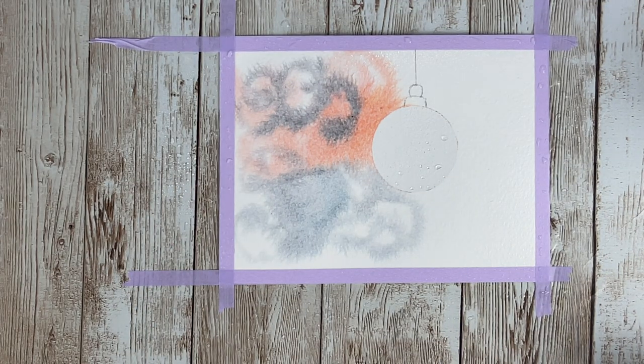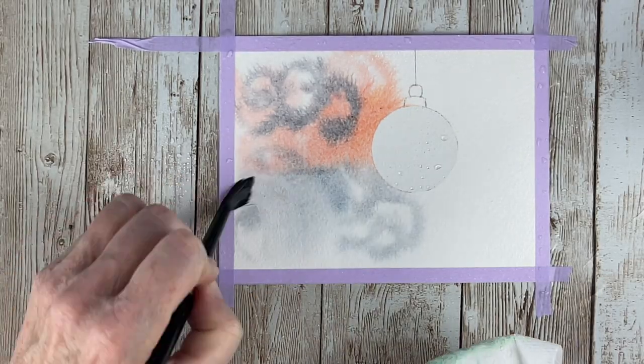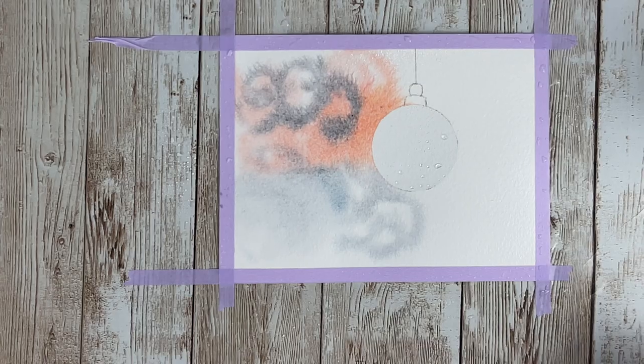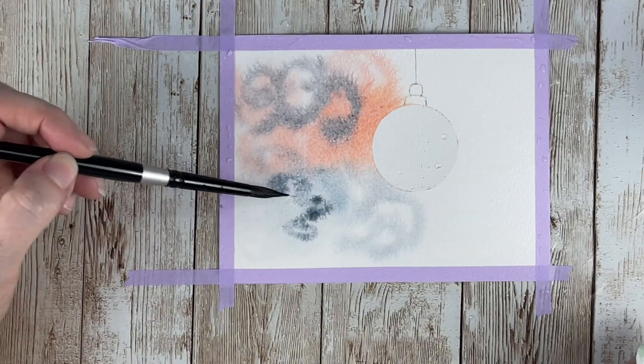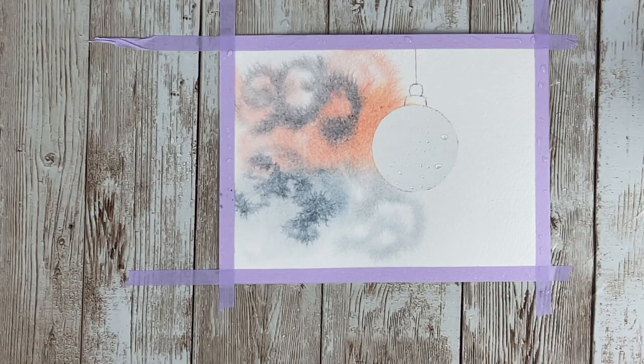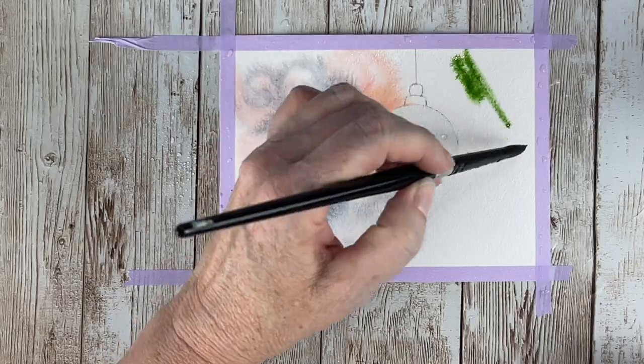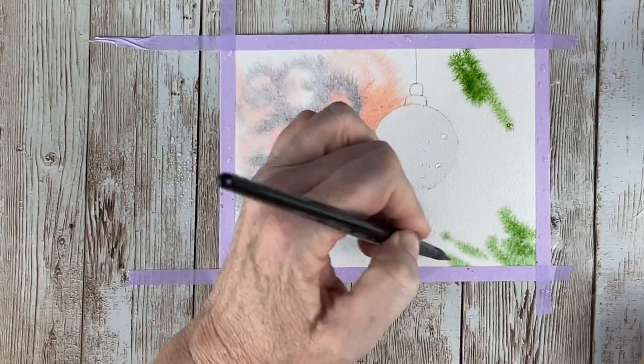I was just looking through some reference photos on Pixabay and there are a lot of ornaments that have that bokeh look. So I just decided to do a quick little loose tree and I'm putting in my sap green here for the tree.